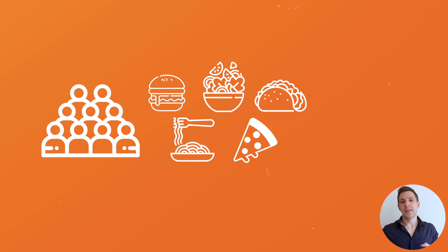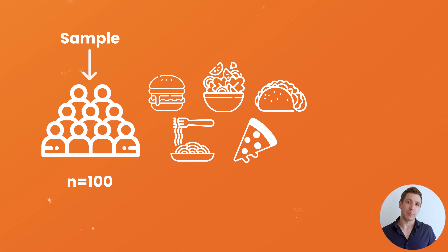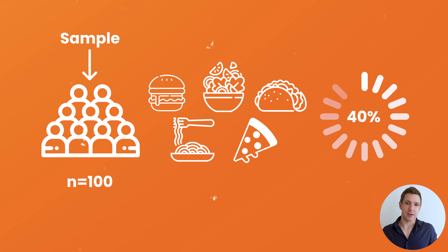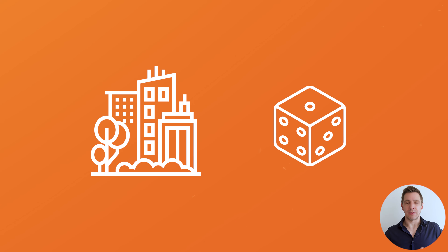That probably sounds rather conceptual, so let's look at a practical example. Let's say that you surveyed 100 people in a specific city about their favorite type of food, and there were five options to choose from. This group of 100 people would be your sample. You might find that 40 people selected the pizza option — in other words, 40% of the sample. You could then use inferential statistics to test whether that number is likely reflective of preferences across the entire city — the population — or whether it's just down to chance. More specifically, you'd use a chi-square test, which we'll talk about a little bit later.